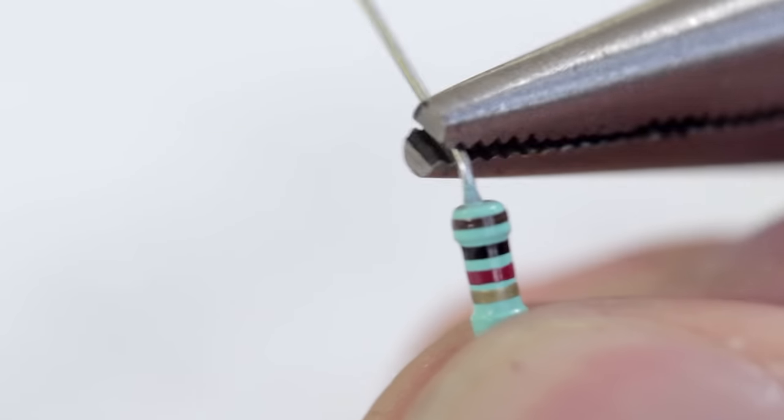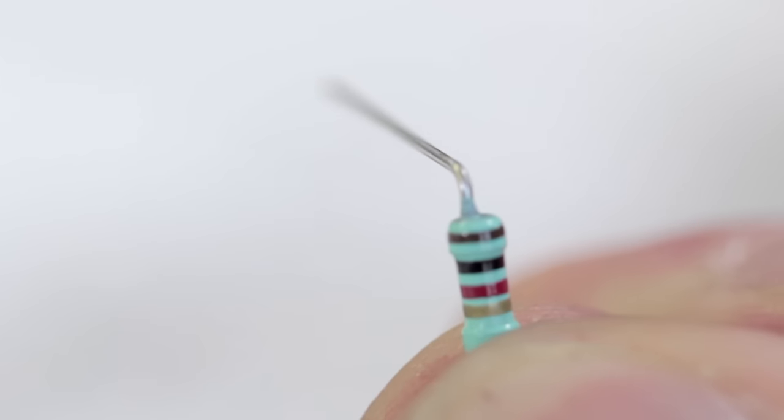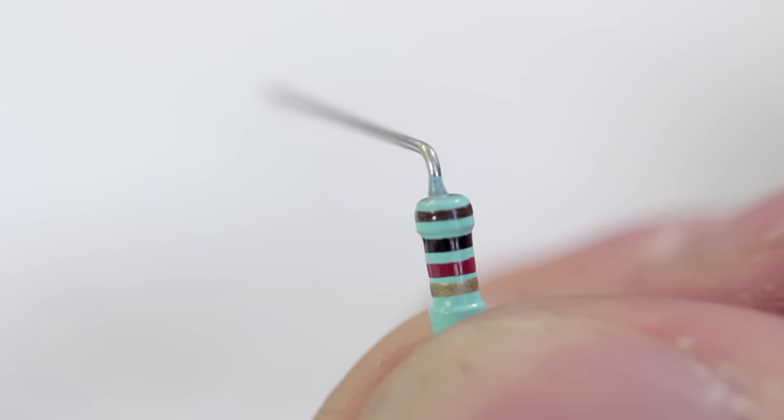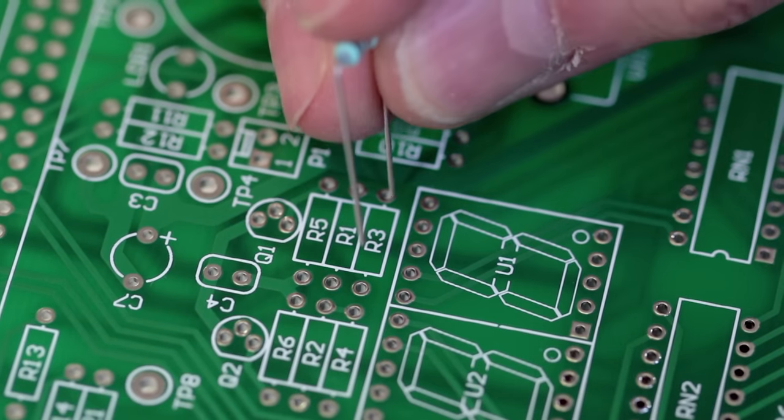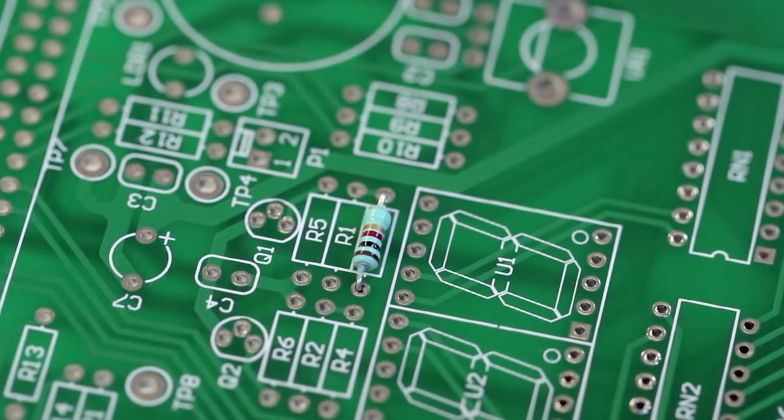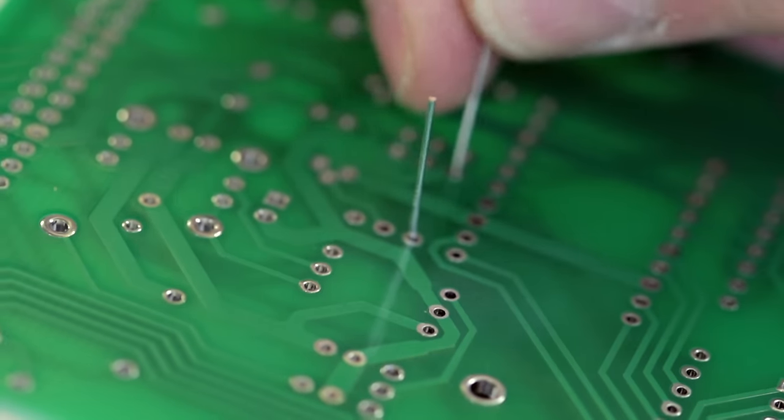First take your component and create a bend in the legs with a pair of pliers so that each leg is at a right angle. Push the legs through the holes in the board at the appropriate place and push it all the way down. Then turn the board over and bend the legs slightly to lock the component in place.